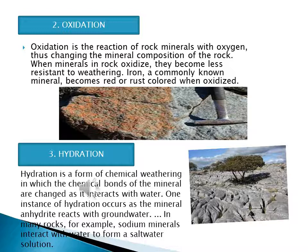The next important process of chemical weathering is hydration. Hydration is a process in which water combines with a mineral. When rain water enters the rock, it increases the volume of the rock. As a result, the pressure reduces the minerals to powder. Feldspar is reduced to kaolin due to hydration.